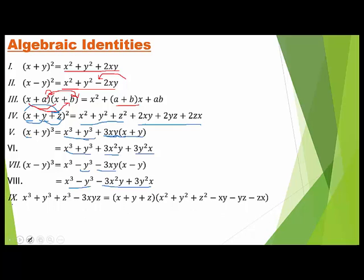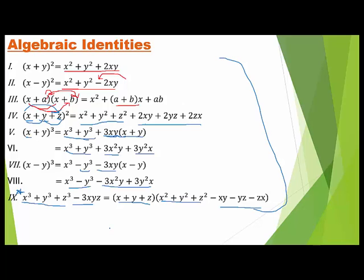Our very important last identity is: x³ plus y³ plus z³ minus 3xyz, which equals (x + y + z)(x² + y² + z² minus xy minus yz minus zx). These are the 9 identities which are very important.